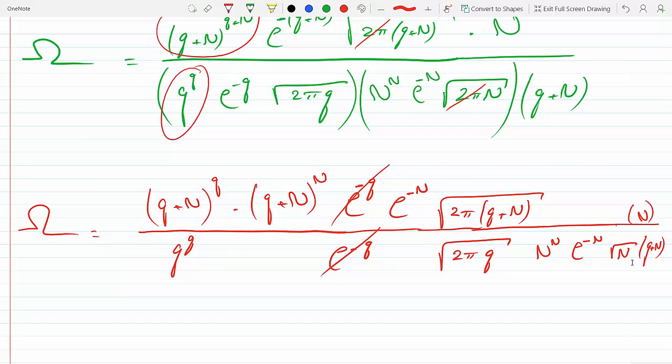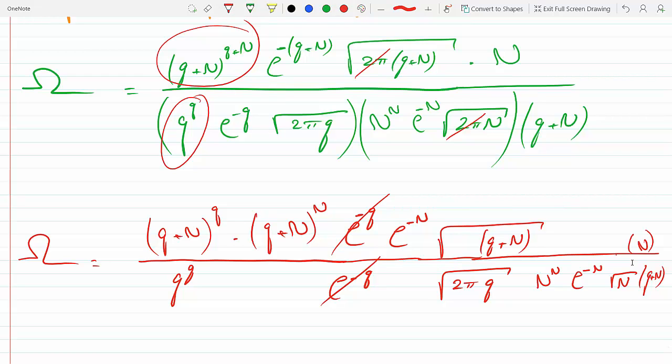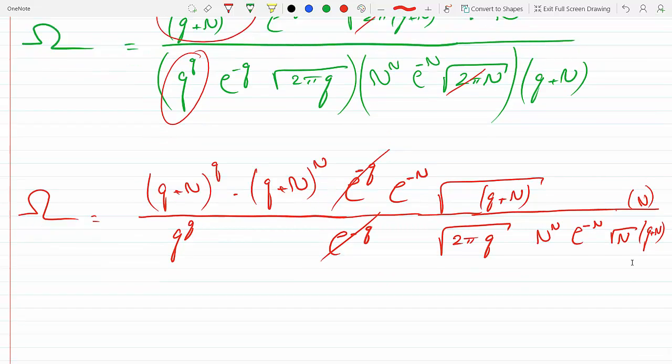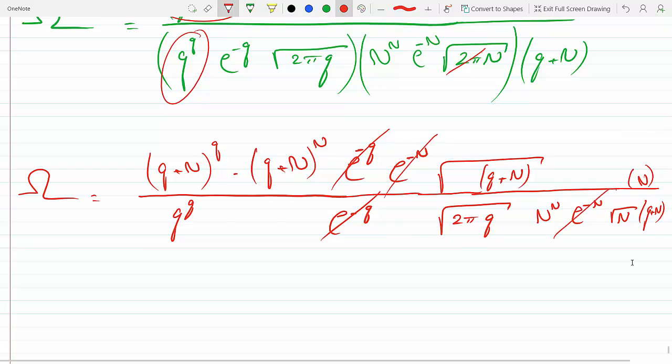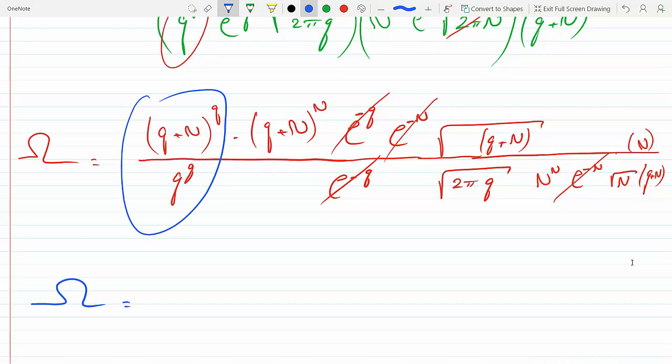And so since I crossed out the 2π, these two guys can go away. e to the minus n can go away with e to the minus n. So now let me regroup. I'll put these two together. So I'm going to put these two together: this is (q+n) over q all raised to the q. This is the first term you're supposed to get in your final answer.